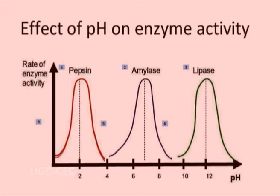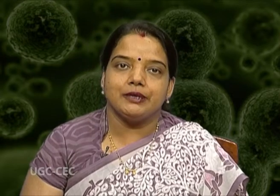Examples include: gastric protease (mainly pepsin) at pH 2 to 3; lipase at pH 12; arginase at pH 10.5 to 11; and amylase at pH 7. Enzymes in different locations have different optimum pH values since their environmental conditions may be different. For example, the enzyme pepsin functions best at around pH 2 to 3 and is found in the stomach which contains hydrochloric acid at pH 2 to 3.